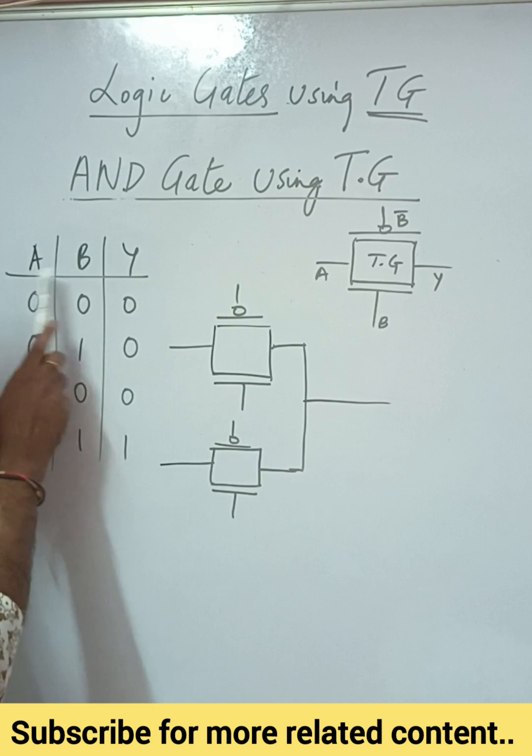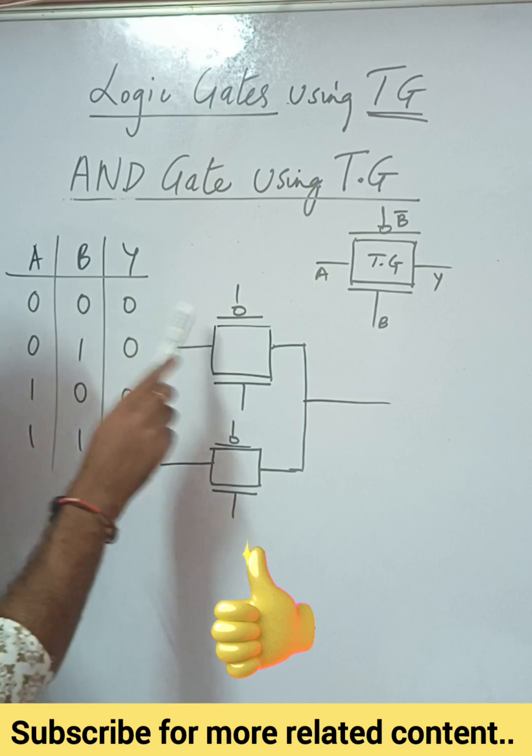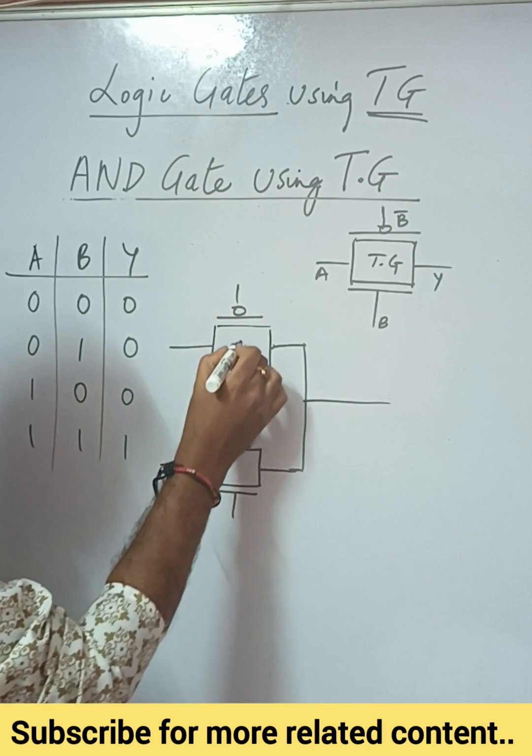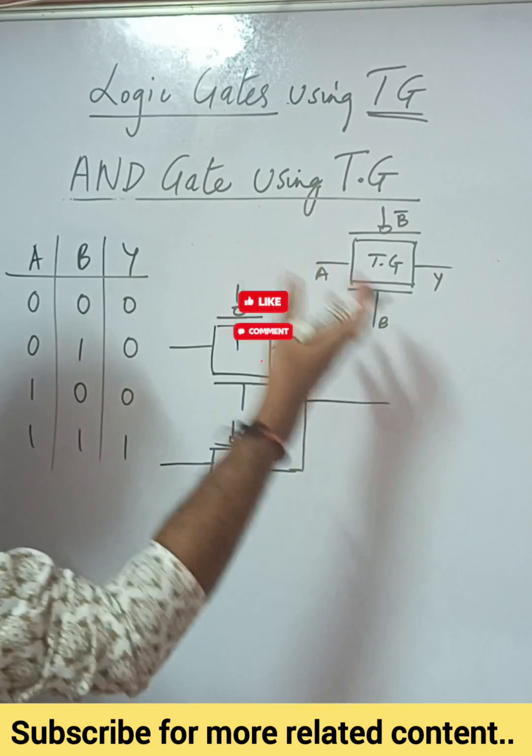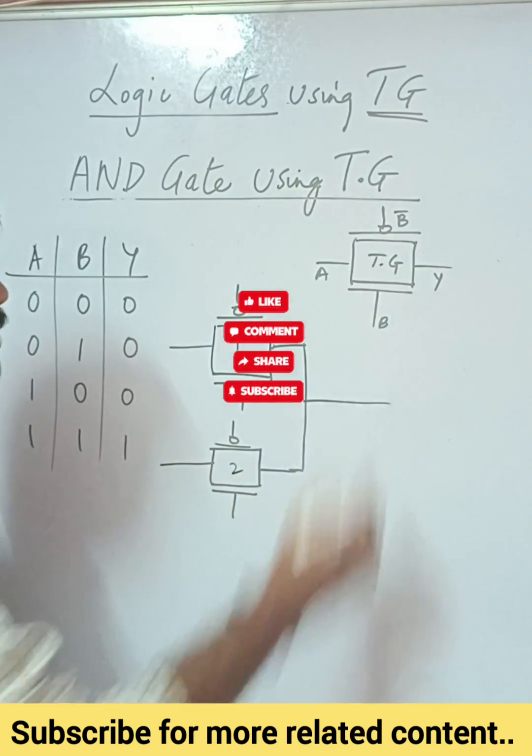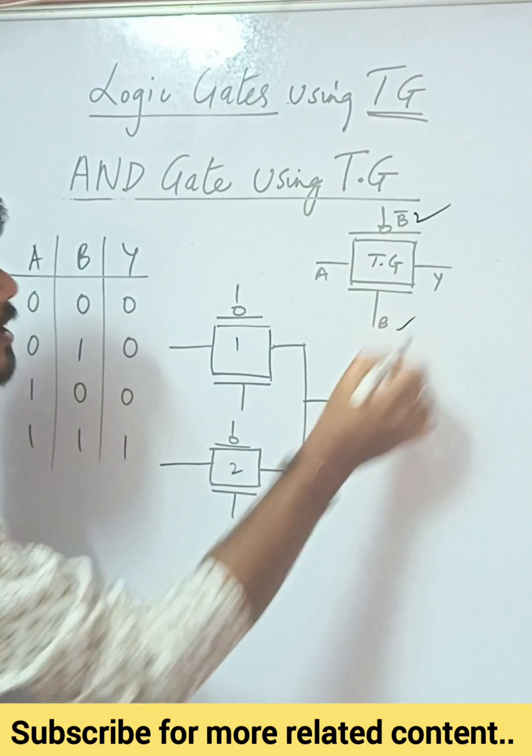So basically, you have two inputs in the truth table, so we have to give two transmission gates. As you can see here we have one transmission gate, this is the second transmission gate. And in order to activate or deactivate the transmission gate, we require a control signal.